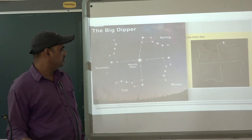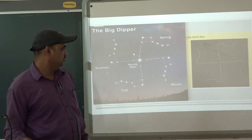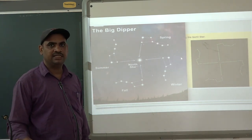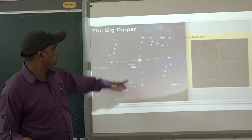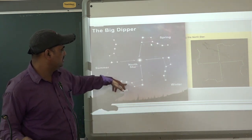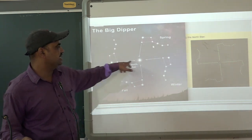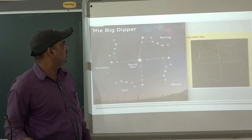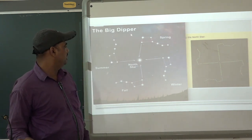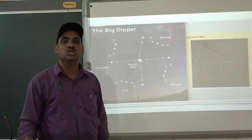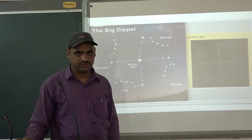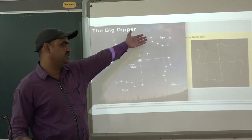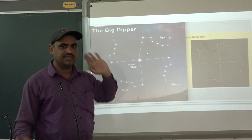Here is one more pattern you can notice — a Swastik-like symbol is created by the stars. This is also called the Big Dipper, and it is also called Cassiopeia. This constellation can also be seen in the sky.